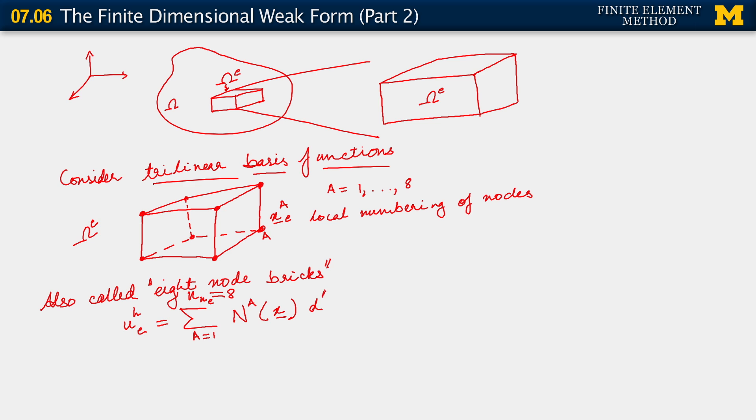We are going to multiply them by degrees of freedom D a sub e. Here too, I'm using a local numbering of degrees of freedom, and this local numbering of degrees of freedom essentially reflects the local numbering of nodes. We also have wh in element e is the sum a going from 1 to number of nodes in the element, Na function of physical position, c a e.